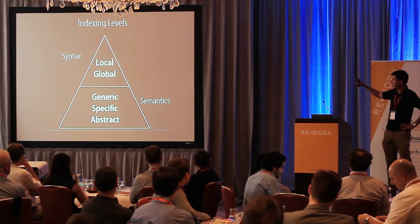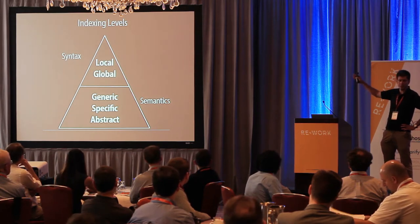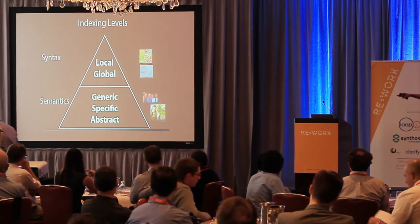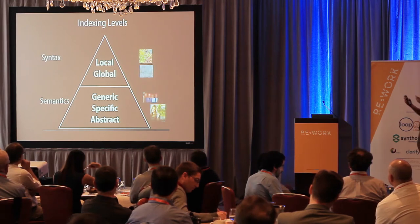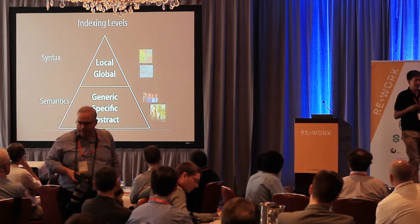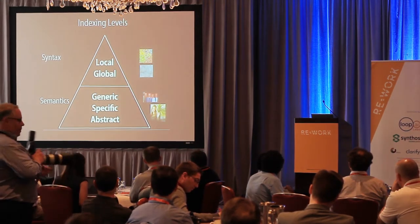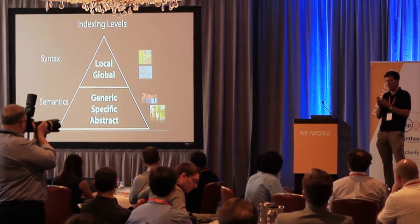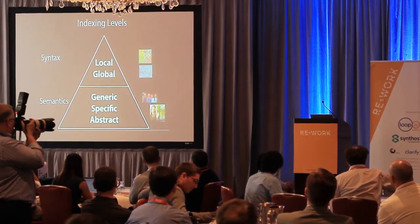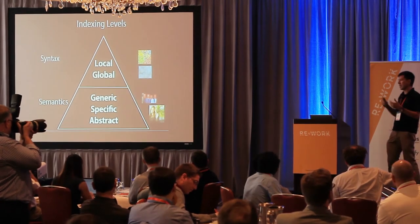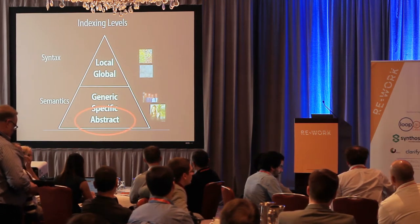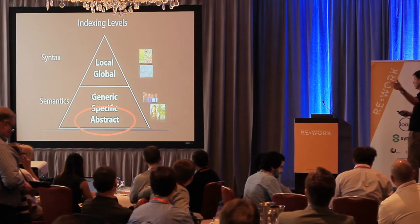In the early days of computer vision and image retrieval, we dealt mostly with the syntactic level — colors, textures, and so on. Now we're more into semantics, the generic level referring to that basic category. For people, that's face detection — saying there's a face. The specific level is about whose face it is, naming that specific object — like Angelina Jolie. And at the abstract level, we say she's happy or sad. That's, I think, the most relevant towards the future, and that's where things need to go.